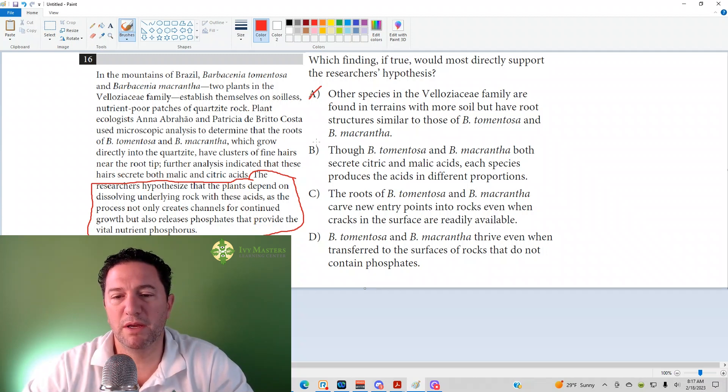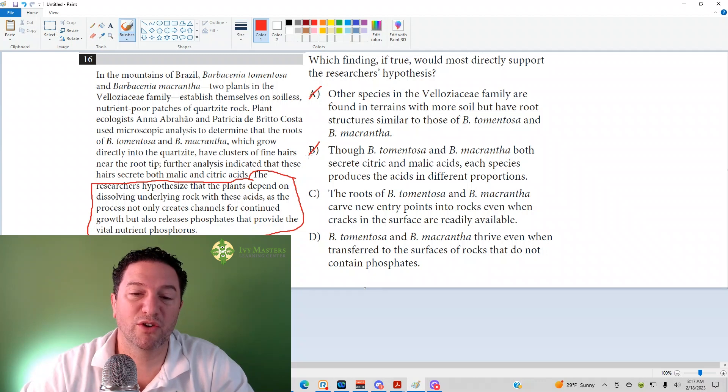Answer choice B, though B. tomentosa and B. macrantha both secrete citric and malic acids, each species produces the acids in different proportions. So the hypothesis has nothing to do with how much each of those plants secrete, or whether or not those portions are different.